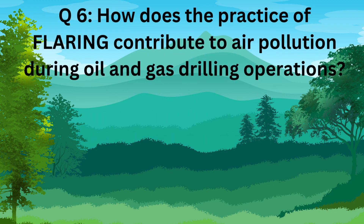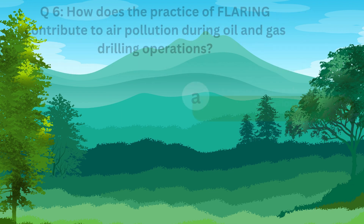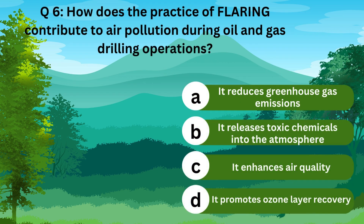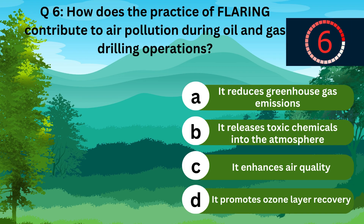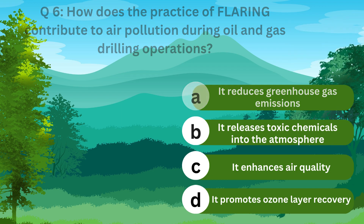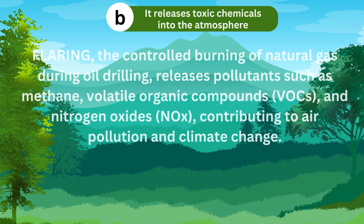Question 6. How does the practice of flaring contribute to air pollution during oil and gas drilling operations? A. It reduces greenhouse gas emissions. B. It releases toxic chemicals into the atmosphere. C. It enhances air quality. D. It promotes ozone layer recovery. The answer is B. It releases toxic chemicals into the atmosphere.